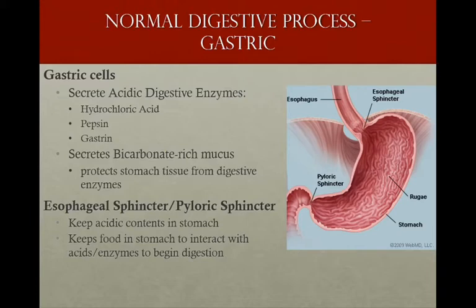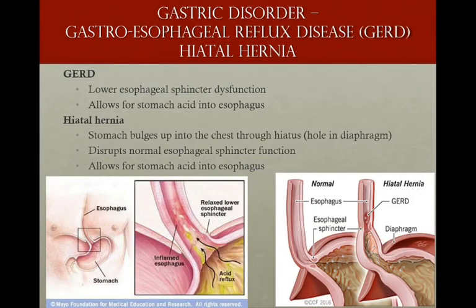The esophageal sphincter is at the end of the esophagus before the stomach, and the pyloric sphincter is at the bottom of the stomach. These sphincters keep acids in the stomach and keep food there to interact with acids and enzymes. Our big problems occur when these sphincters don't work or when acid gets outside of the stomach space. Starting at the bottom of the esophagus, we're going to talk about GERD — gastroesophageal reflux disease.